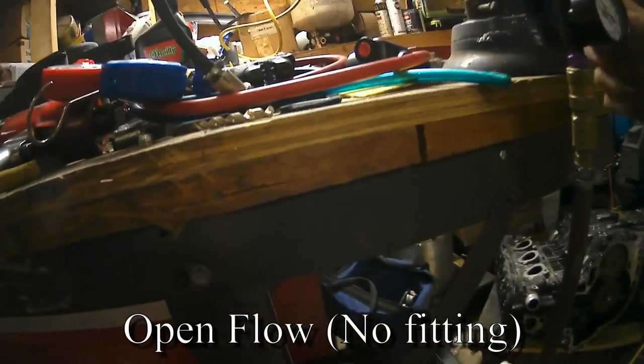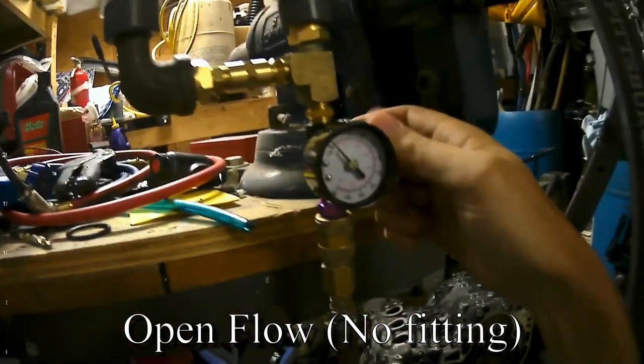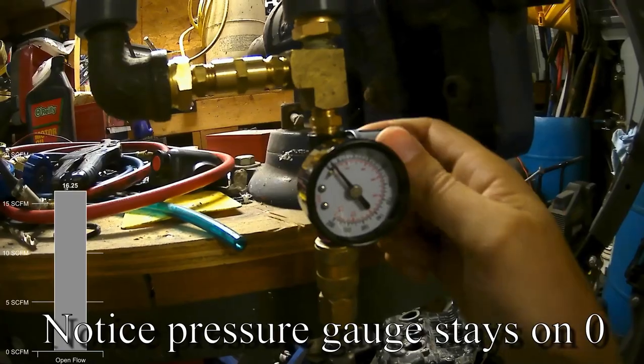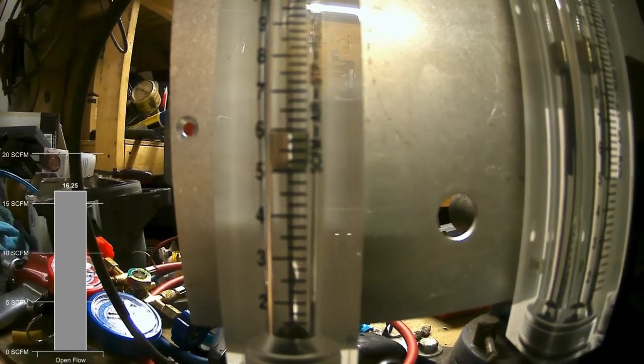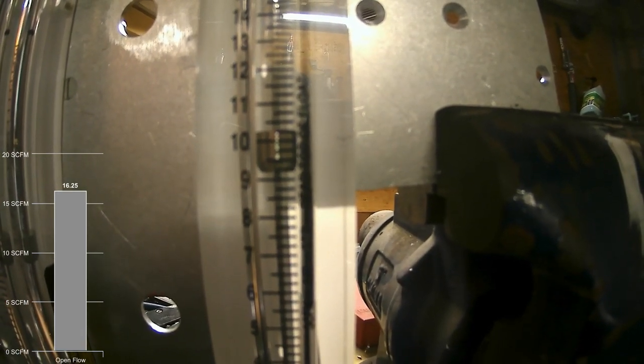So here we are with no fitting in as a restriction at the top. Note that pressure gauge doesn't move at all, so it shows there's little to no restriction. Six SCFM on the left gauge, and about 10 and a quarter on the right gauge, which totals up 16 and a quarter, as you can see in the little on-screen chart.